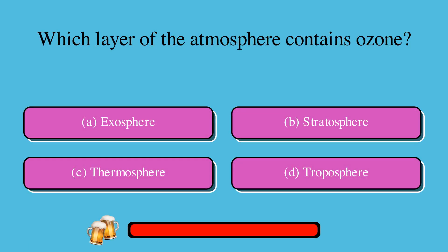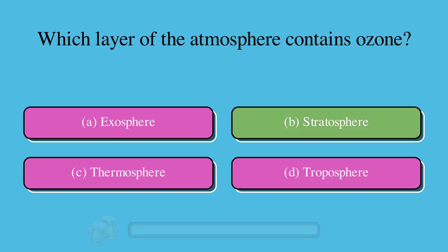Which layer of the atmosphere contains ozone? A. Exosphere, B. Stratosphere, C. Thermosphere, or D. Troposphere? The correct answer is B. Stratosphere.